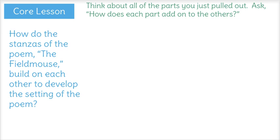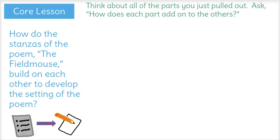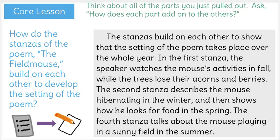Now all I have to do is use my notes to answer the question in complete sentences. I'm answering the question, how do the stanzas of the poem, The Field Mouse, build on each other to develop the setting of the poem? The stanzas build on each other to show that the setting of the poem takes place over the whole year. In the first stanza, the speaker watches the mouse's activities in fall, while the trees lose their acorns and berries. The second stanza describes the mouse hibernating in the winter, and then shows how he looks for food in the spring. The fourth stanza talks about the mouse playing in a sunny field in the summer.